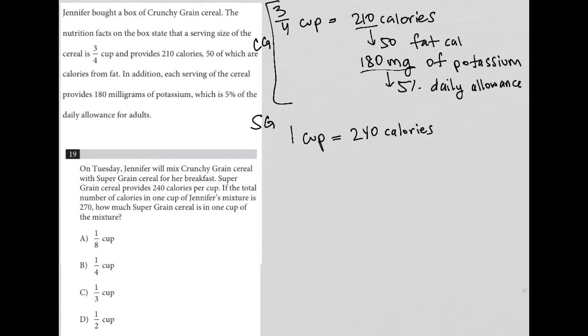So first of all, we know Jennifer's mixing both types of cereal and at the end of the day has one cup of the mixture. So I am going to call CG or the crunchy grain, I'm going to call that X, right? So we don't know how much of that is in her mixture. And I'm going to call the super grain Y, because we don't know how much of that cereal is in her mixture. But we do know that when she adds the two cereals together, she's going to have one cup, right? So X plus Y is equal to one.